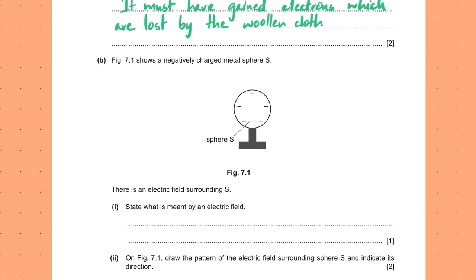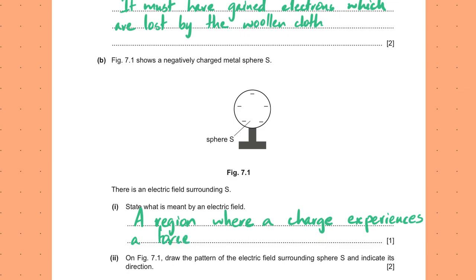Figure 7.1 shows a negatively charged metal sphere S with an electric field surrounding it. State what is meant by an electric field. An electric field is a region in space where a charge experiences a force. Compare: a gravitational field is where a mass experiences a force, and a magnetic field is where a pole experiences a force.